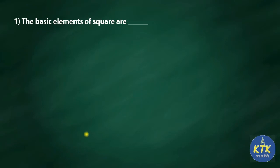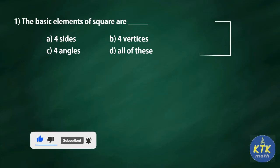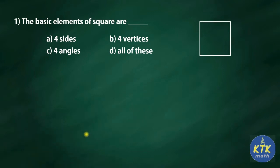Okay, the first question: the basic elements of a square. Your options are four sides, four vertices, four angles, or all of these. Imagine a square — we have been learning about squares since the third standard, so we know the properties. It has four sides, four vertices (which are the corner points), and four angles. So the answer is D, all of these.